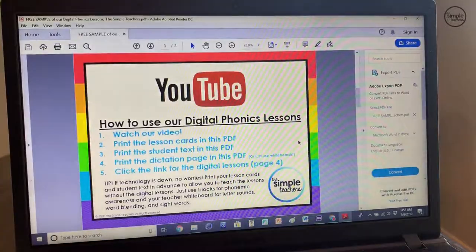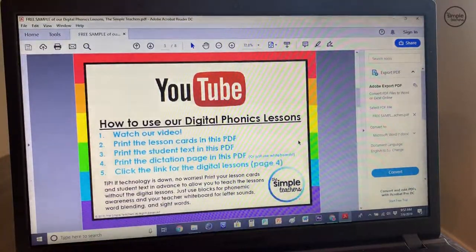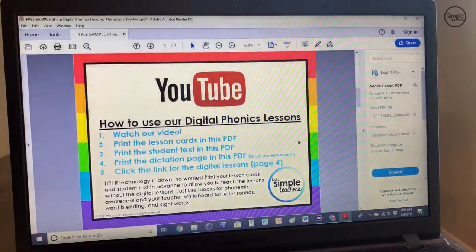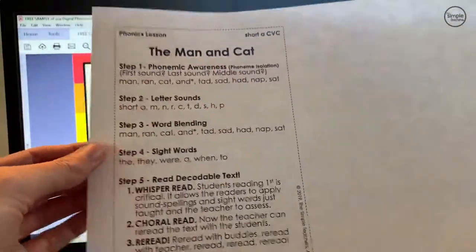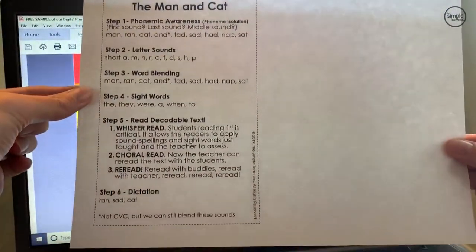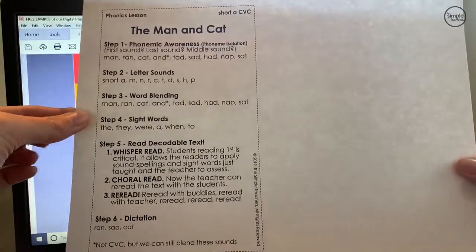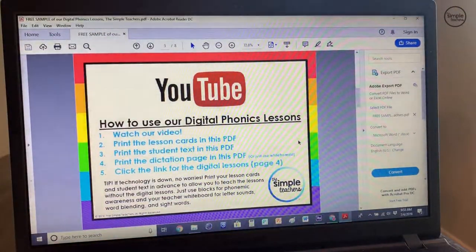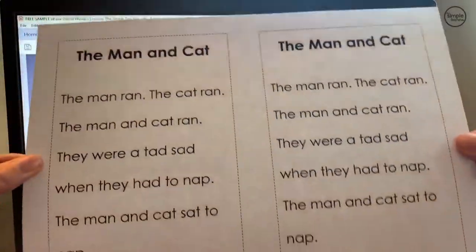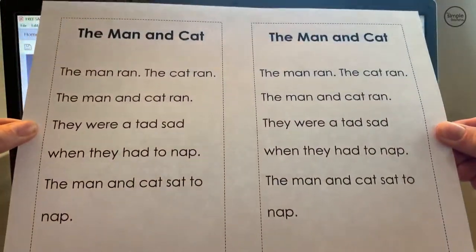Page three will describe how to use our digital phonics lessons. Step one is to watch this video — the link is in the PDF. Step two is to print the lesson cards. Here's an example of the lesson card when printed; you could fold it in half or cut it. Step three is to print the student text in this PDF. We have them two to the page — you can slice them in half.